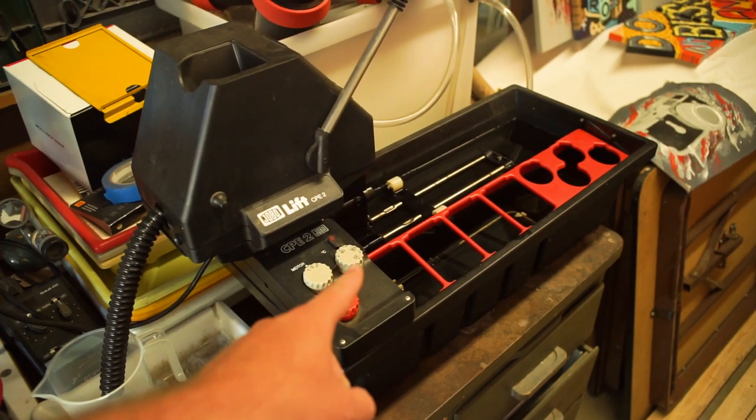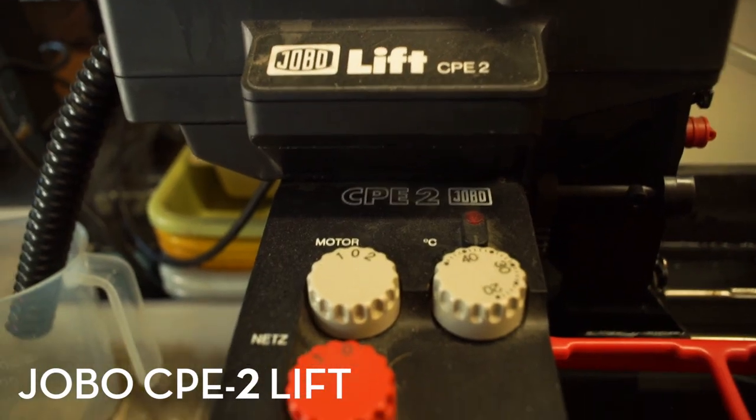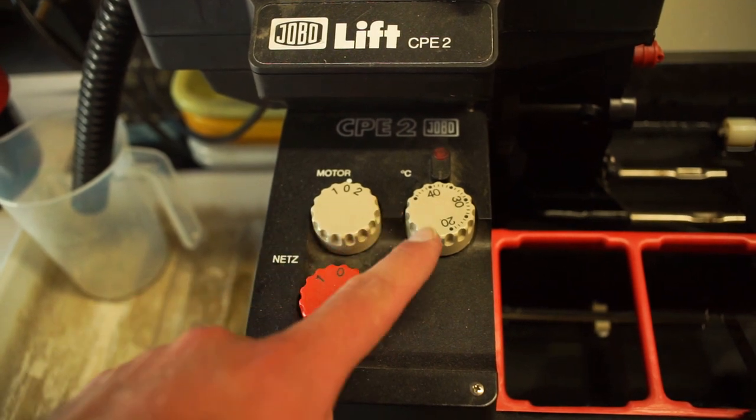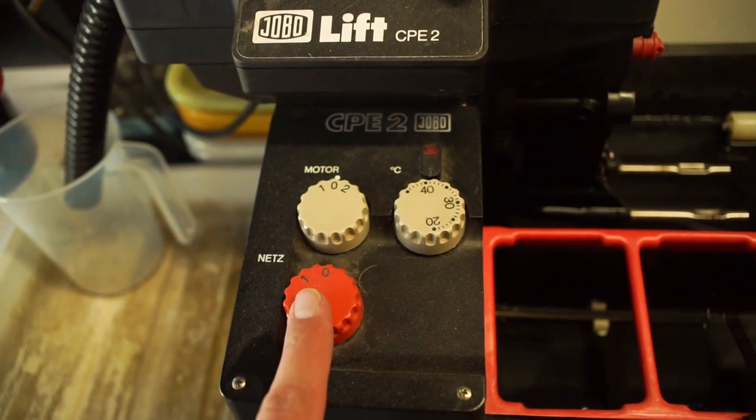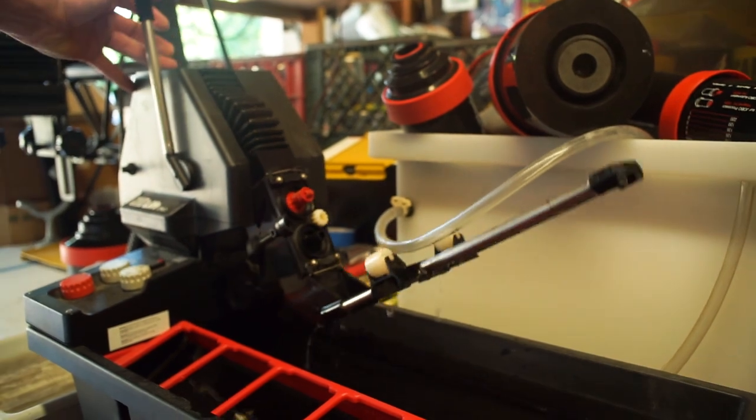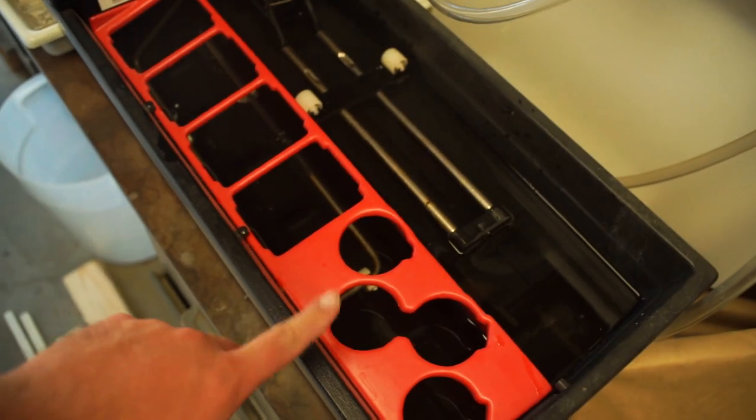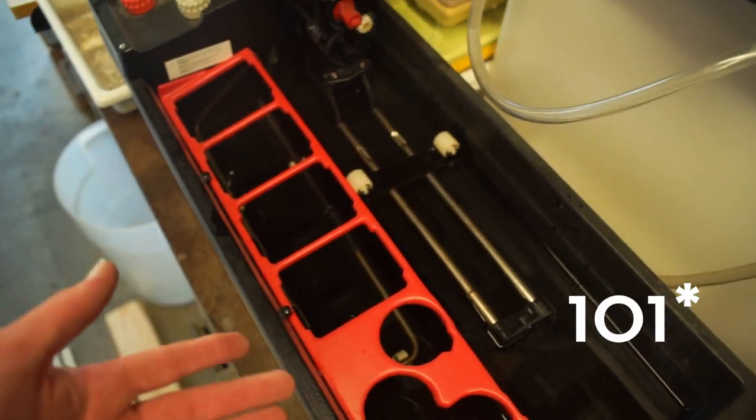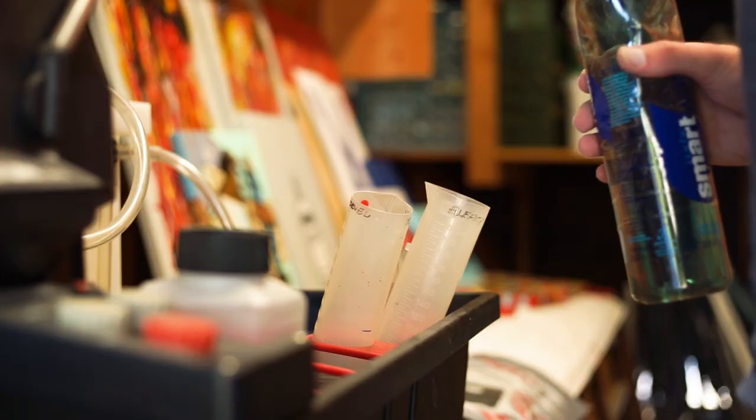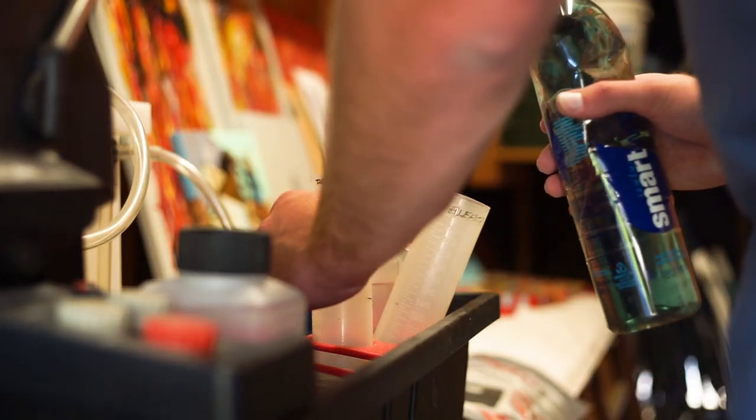I'm using a Jobo, and a Jobo is an automatic film processor which keeps your chemicals at the right temperature and rotates your film so you get total even development. Then it also has spots to hold your chemicals to keep them at the right temperature. Here I'm just pouring them into the smaller containers which is exactly enough to fit into the tank.